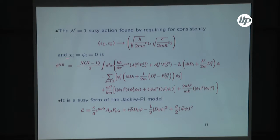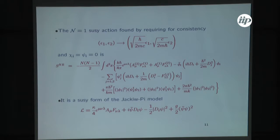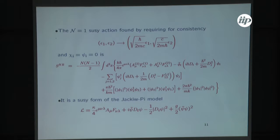The non-relativistic limit of this Lagrangian is described by this mapping. In order to get a supersymmetric action, we find for consistency that we also have to rescale the supersymmetry parameters — epsilon was a two-component fermion with epsilon_1 and epsilon_2 — and these two components are required to scale differently with c. The corresponding non-relativistic action has a Chern-Simons term which is not modified in the non-relativistic limit, plus a non-relativistic scalar action, a non-relativistic fermion action, and some potential: a quartic scalar interaction and an interaction of two scalars with two fermions.